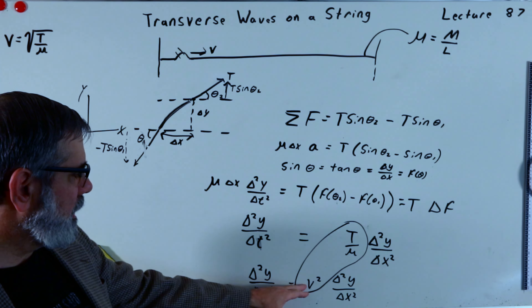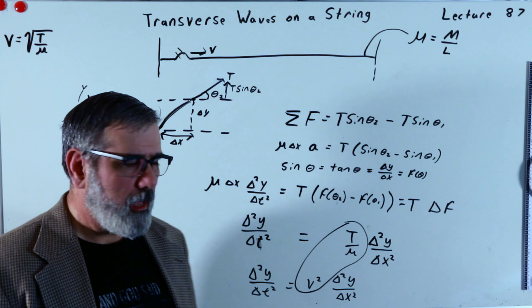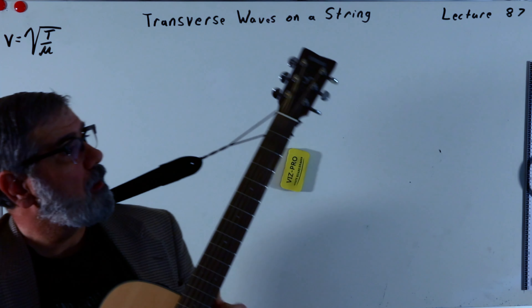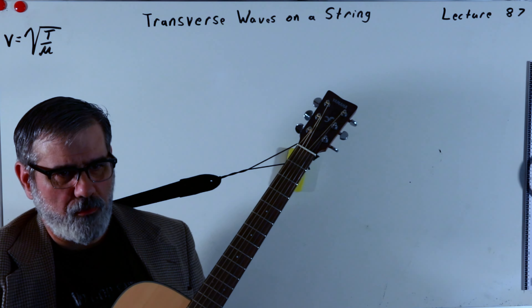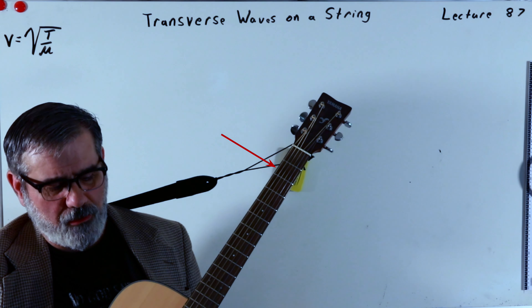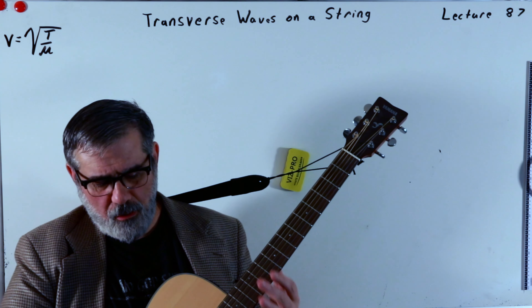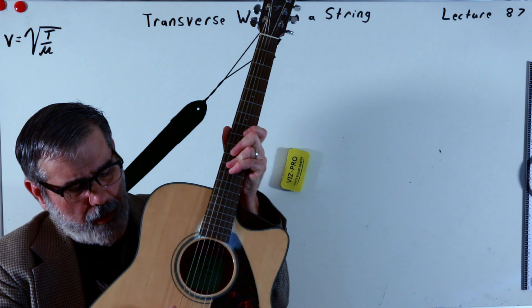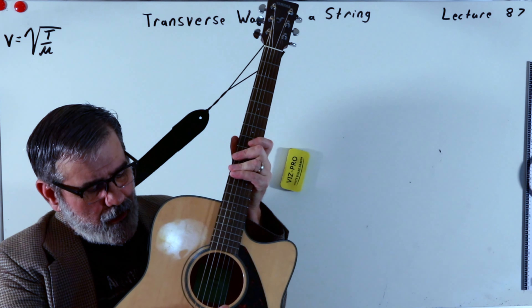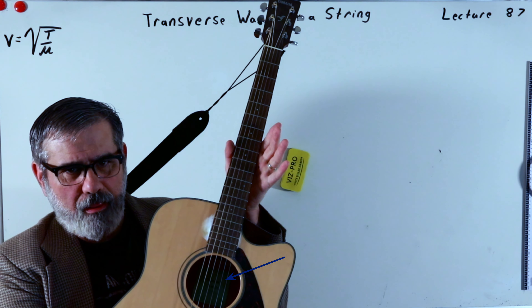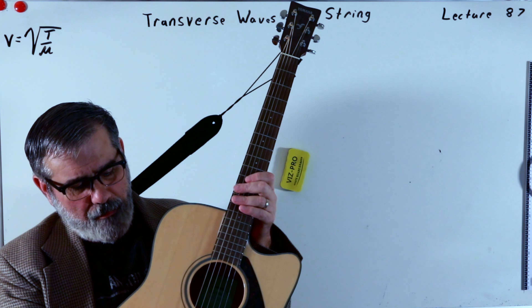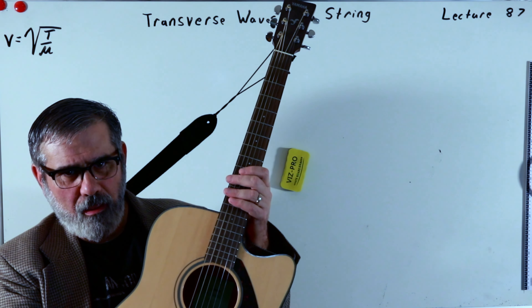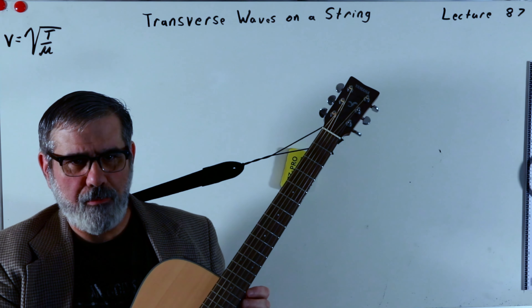That means the velocity of this wave is equal to the square root of T — the tension in the line — divided by mu, the linear density of the string. We've derived the wave equation from Newton's laws, and it's only applicable if the amplitude is small. But I wanted to show that you can derive from Newton's laws the same wave equation we came up with the other day. And in this case, we get what the velocity is for a wave on a string. This brings us back to the guitar.